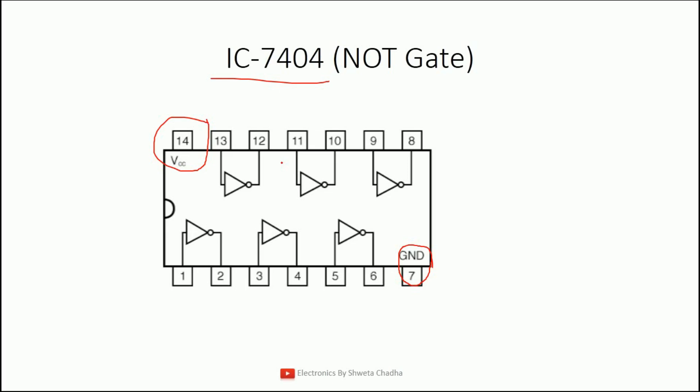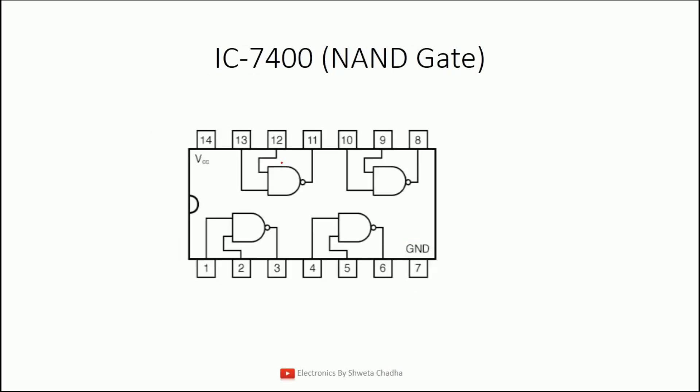With a single IC of the NOT gate we are able to implement a total of 6 gates: gate number 1, 2, 3, 4, 5, and 6. This is the NOT gate IC diagram.